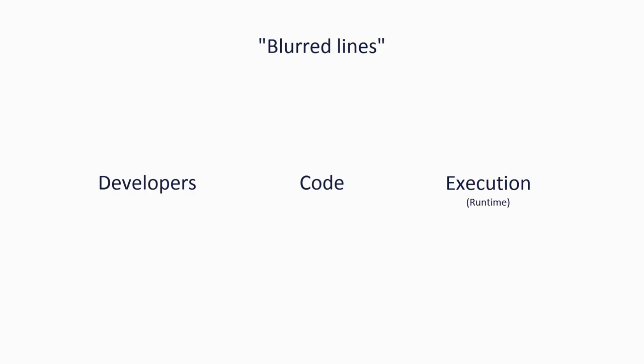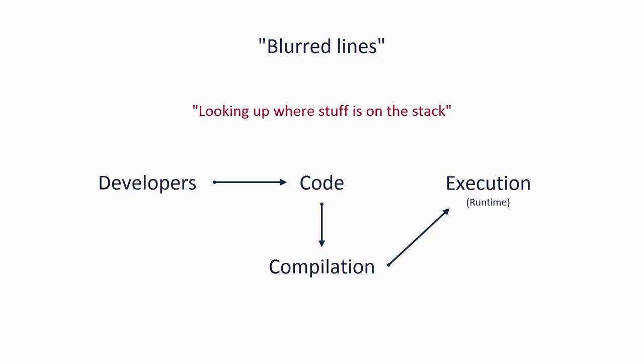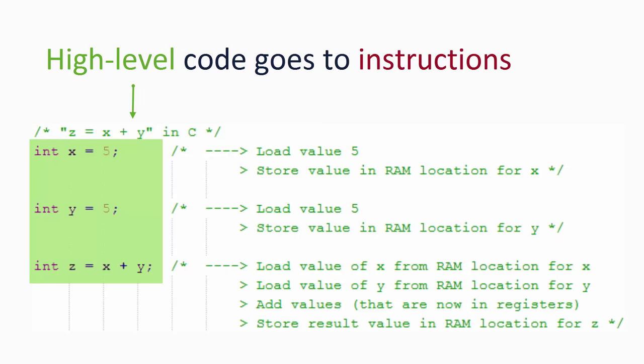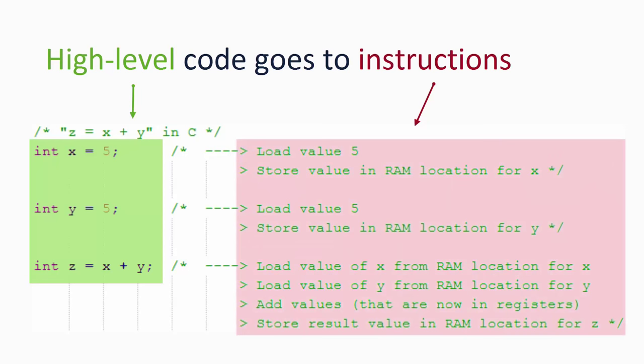I should point out that I have blurred the lines a bit between developer's code and execution. Some bits of what have been described actually happen during compilation. For example, the low-level guys looking up where things are on the stack actually happens during compilation. But the addition operation is an actual operation which occurs during execution, i.e. at runtime. Finally on this topic, a program is just a list of instructions and some preset data such as strings. Each line of high-level code goes to one or more assembly level instructions, often three or four. Execution of a program starts at the instruction corresponding to the start of the main method, and then continues from there in order until the end of the program is reached.